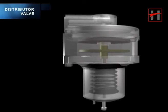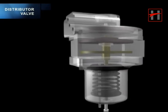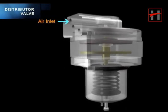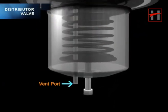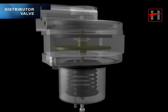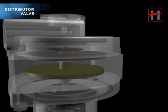The important parts of the distributor valve are air inlet, air outlet, vent port, diaphragm and valve stem.